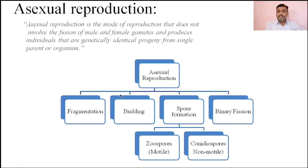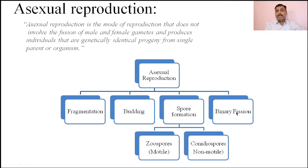Asexual reproduction is carried out in lower organisms by four different types of methods. Organisms are classified on the basis of their appearance in the environment as primitive organisms and evolved organisms. In primitive organisms, asexual reproduction is carried out by four methods: fragmentation, budding, spore formation, and binary fission. Spore formation is of two types: zoospore formation and conidiospore formation, classified based on the type of spores produced.